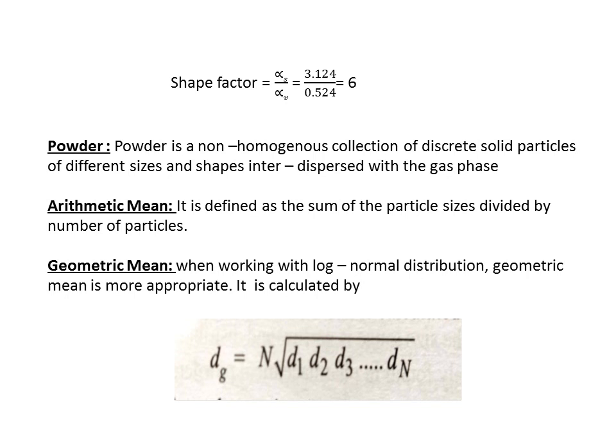Arithmetic mean is defined as the sum of particle sizes divided by the number of particles. For example, given a sample of 10 grams of powder having some number of particles of different sizes, you note down the particle sizes of each particle and divide by the number of particles. Geometric mean is more appropriate when working with a log normal distribution curve and is calculated using a specific equation.